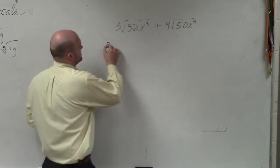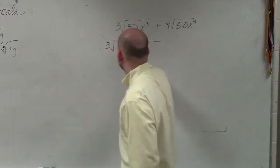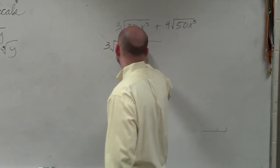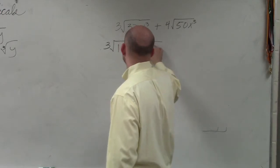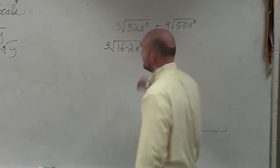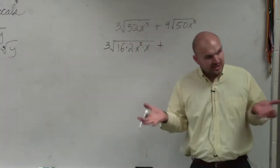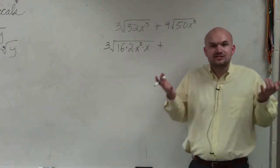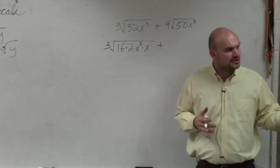To simplify this, 32 I can break down into 16 times 2, and x cubed into x squared times x. Does everybody understand how I rewrote that? I didn't change the answer to the problem. I just rewrote it as square numbers or squared expressions.